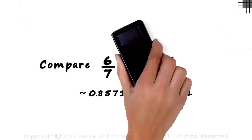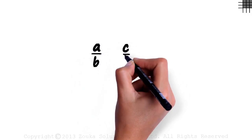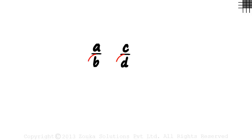Here, let's look at a simpler way to compare two rational numbers. Say we have two rational numbers, A by B and C by D. We assume that the denominators B and D are positive integers.